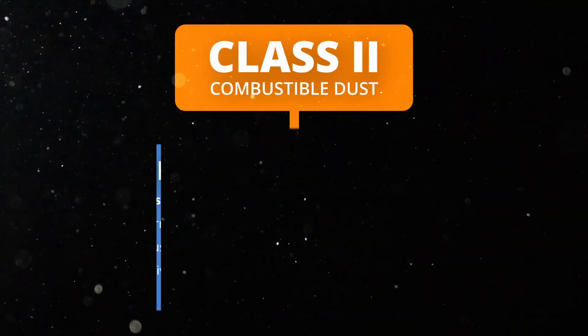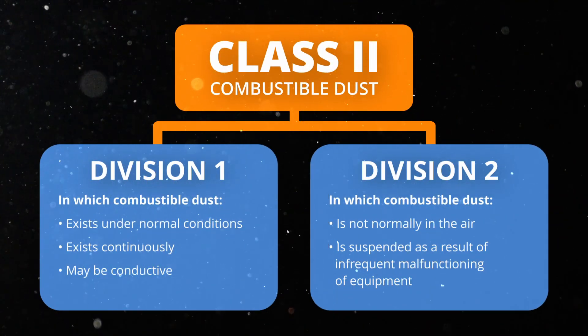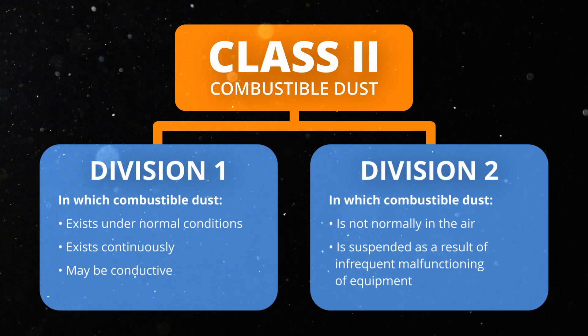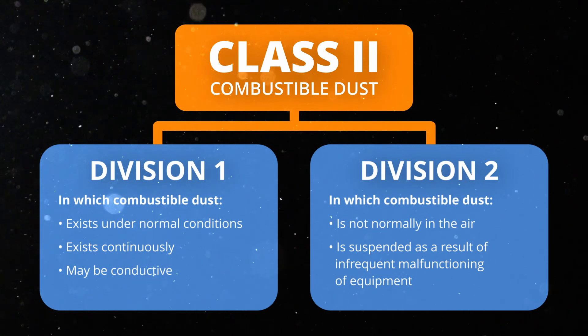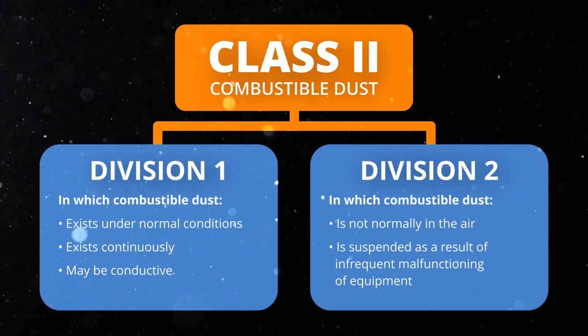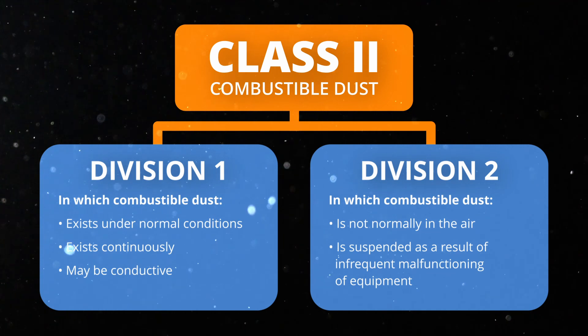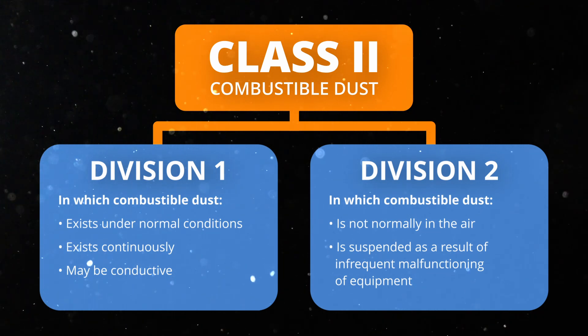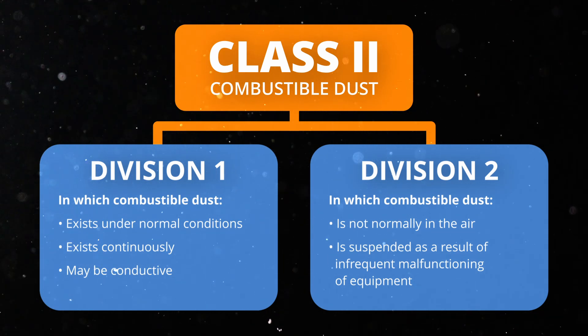Once you have determined that there are particular areas of handling or generating dust within your facility that should be considered class 2 rated, you must determine if they should be division 1 or division 2. Division 1 means that a combustible dust hazard exists regularly, whereas division 2 should be used for areas where the hazard exists infrequently — such as if a machine malfunctions or there's a clean-out process that occurs periodically.